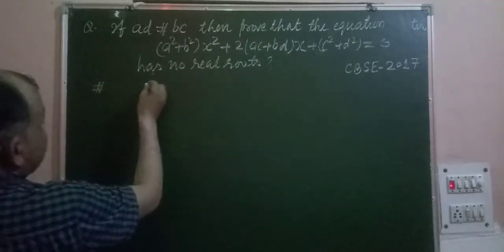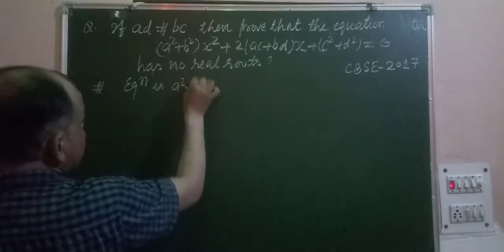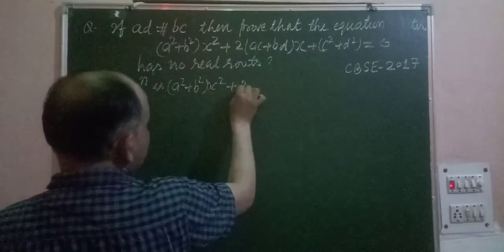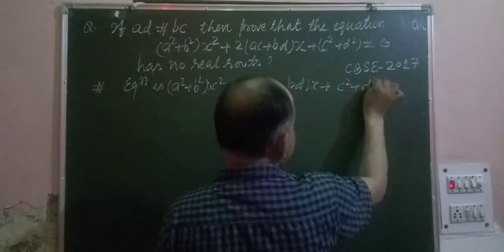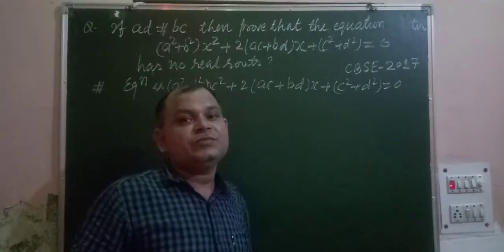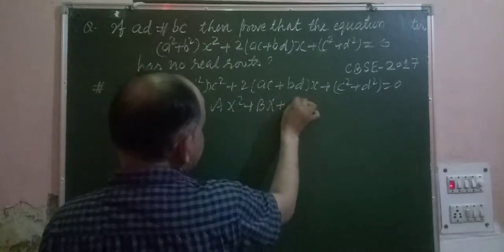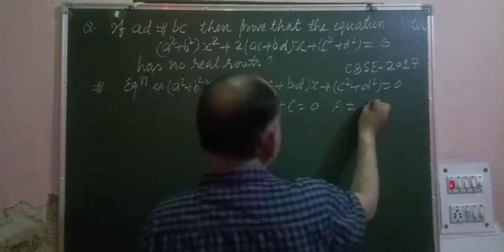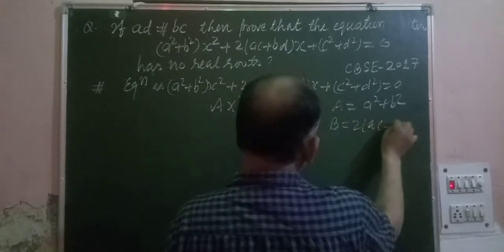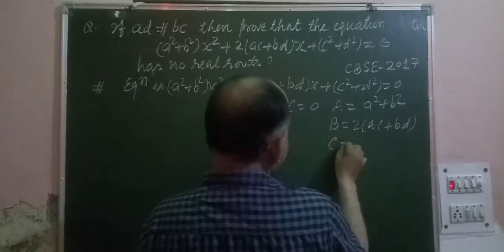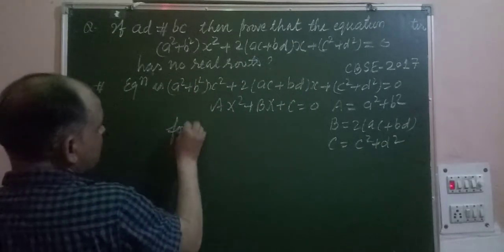We have the quadratic equation: (A² + B²)X² + 2(AC + BD)X + (C² + D²) = 0. Comparing this with standard form aX² + bX + c = 0, we get: a = A² + B², b = 2(AC + BD), and c = C² + D².